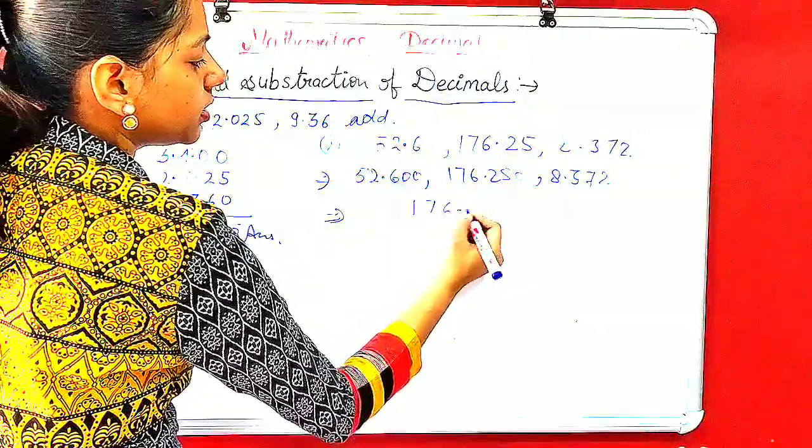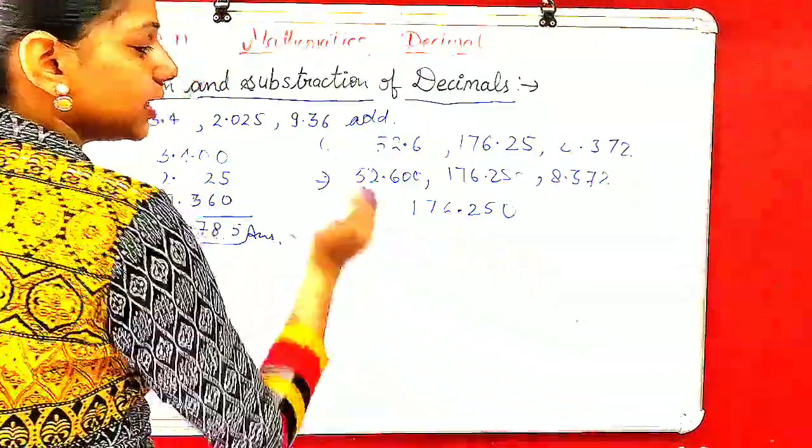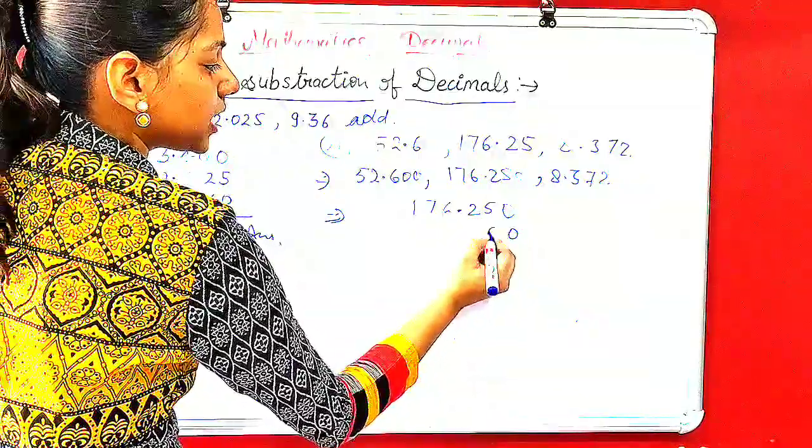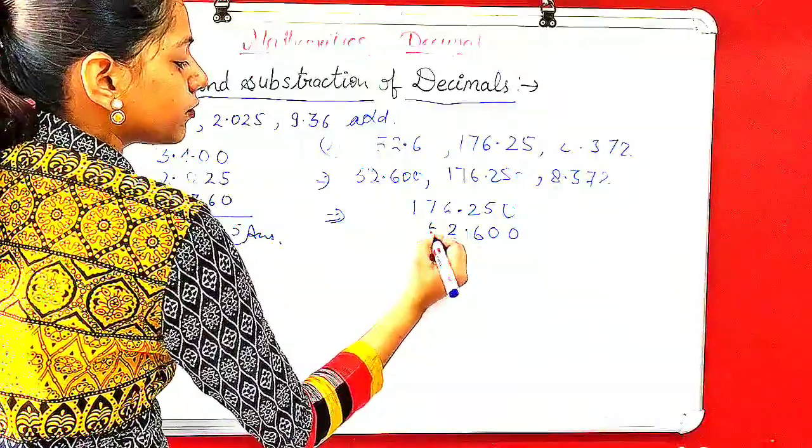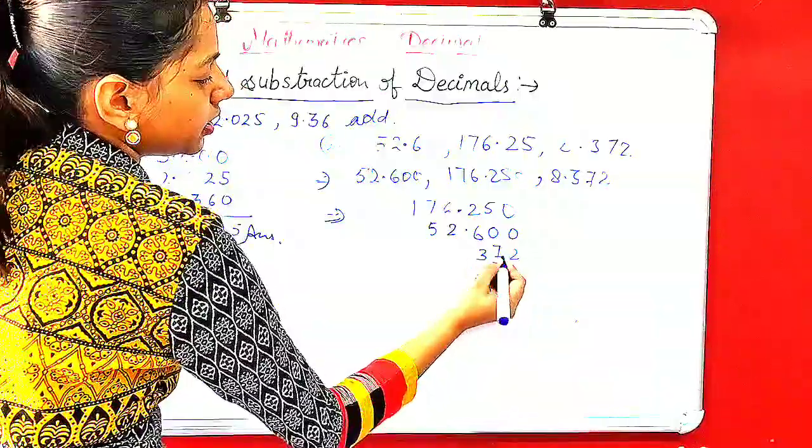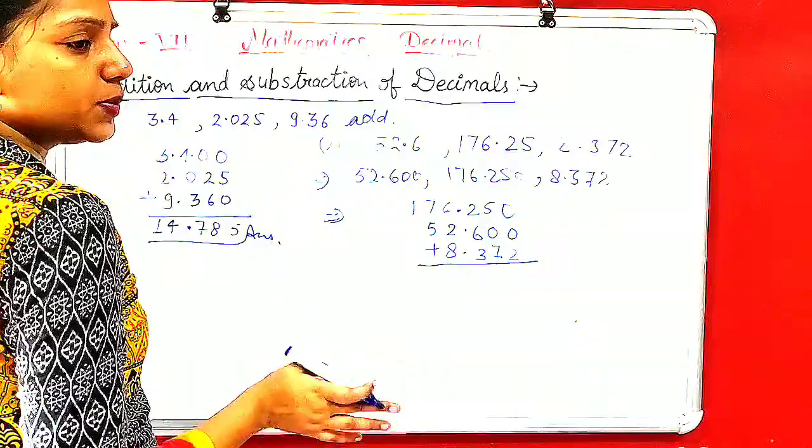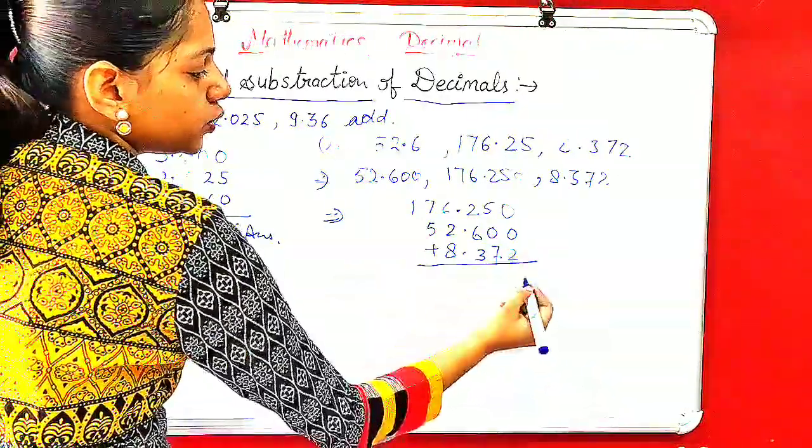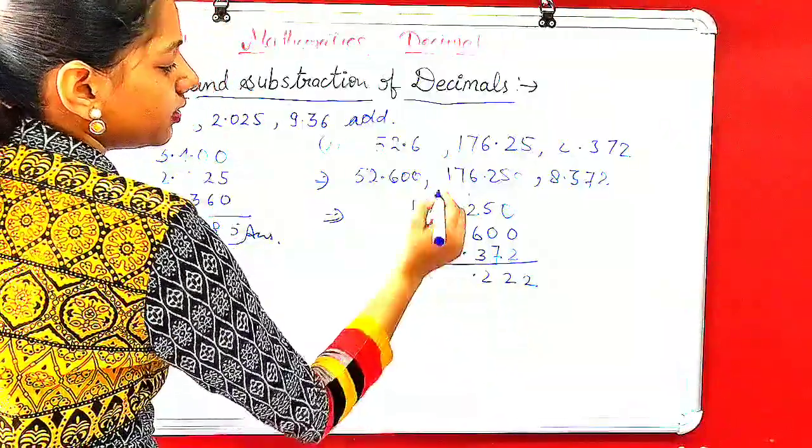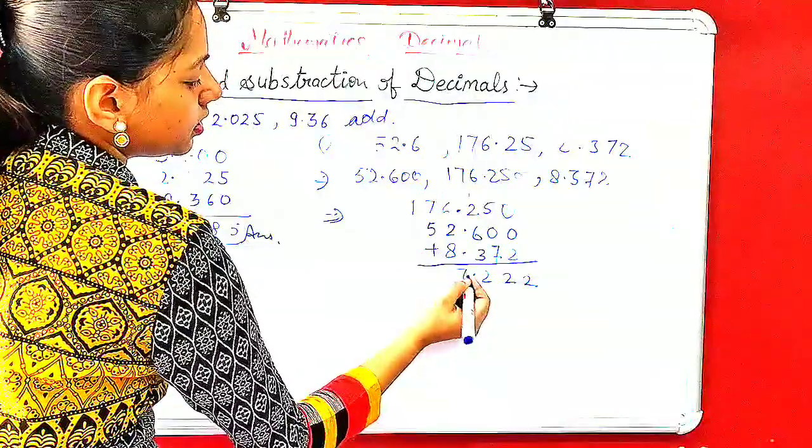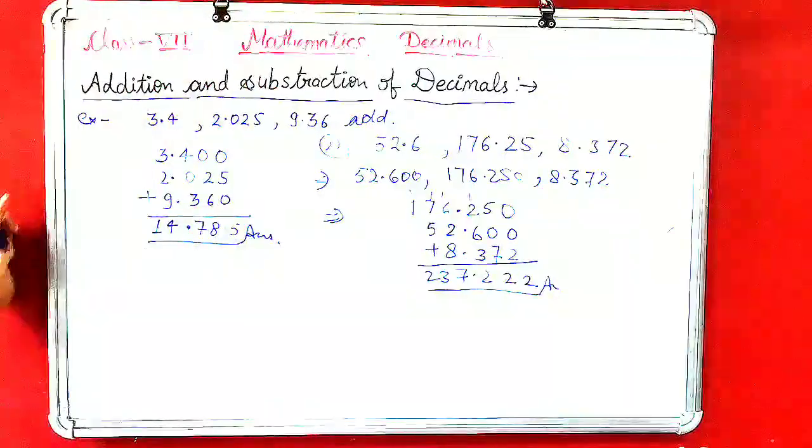Point 6, then 8.372. Now add: zero plus zero is zero. Two plus seven plus three equals twelve, write two carry one. Five plus six plus seven equals eighteen, one carry. One plus seven plus two plus eight equals eighteen, carry one. Finally thirteen. The answer is 237.172.